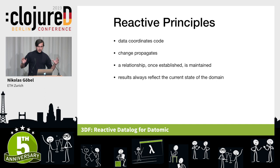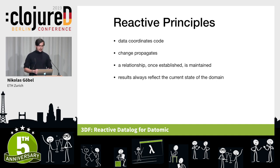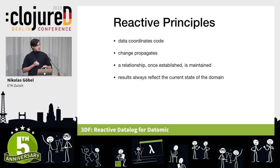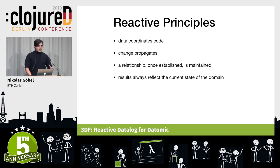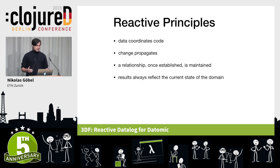I want to extract some principles from that — not a complete set, just to get into the mindset. One of the most important properties is that data coordinates code. We're used to having code that reaches around and moves data all over the place, but instead we want to turn this around and have code be coordinated by data. We want systems that only propagate change — we don't want to send around big results all the time if nothing really changed, only the small pieces that have some novelty. And we want a computational relationship, once established, to be maintained as new data streams in — so constraints, for example, are never violated even if the underlying data changes.